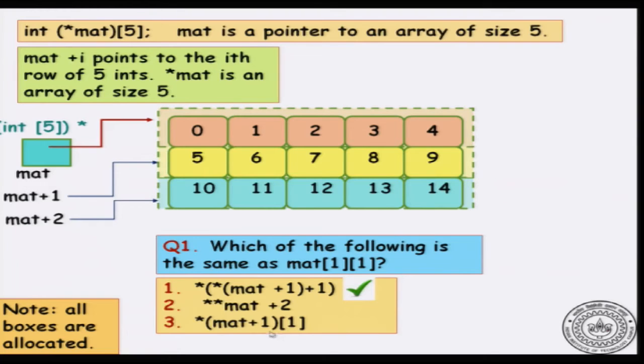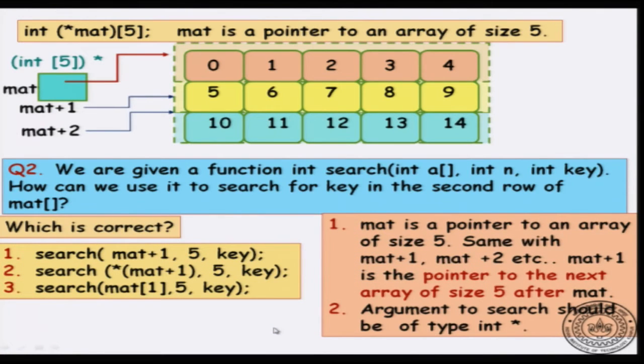To get comfortable with the notation, try to decode: what is the pointer arithmetic way of representing mat[1][1]? You can see that it is *(*(mat+1)+1), which follows directly from the formula we just discussed. But if you decode only one subscript using pointer arithmetic and leave the other as is, it is also equivalent to *(mat[1]+1). Try to convince yourself why only decoding one subscript still gives a valid representation.